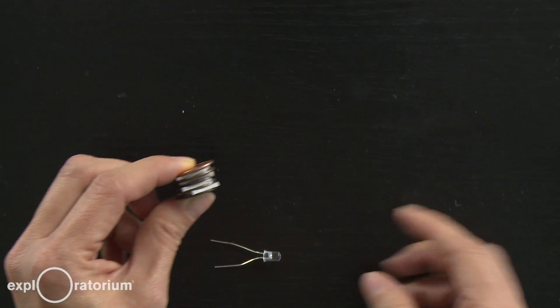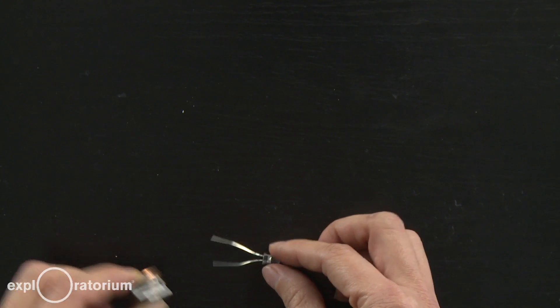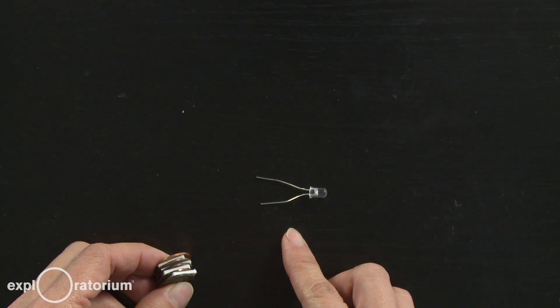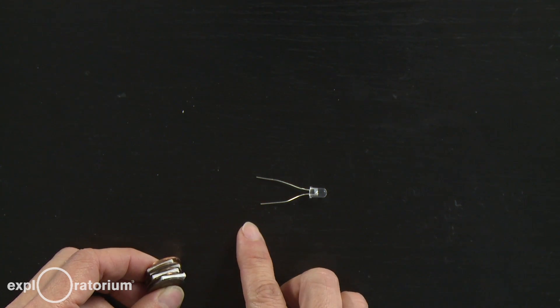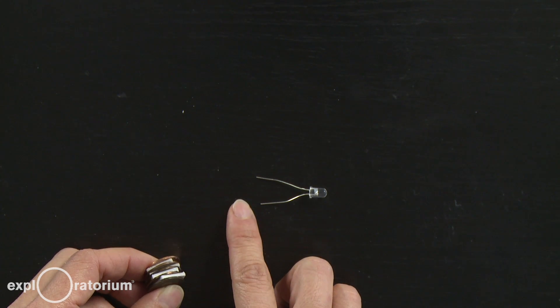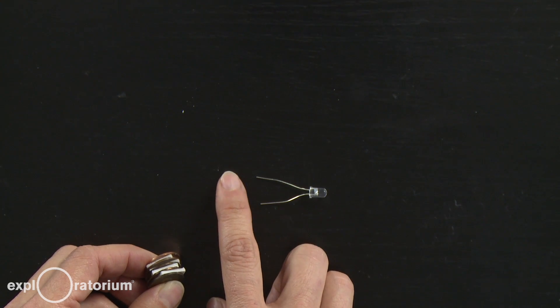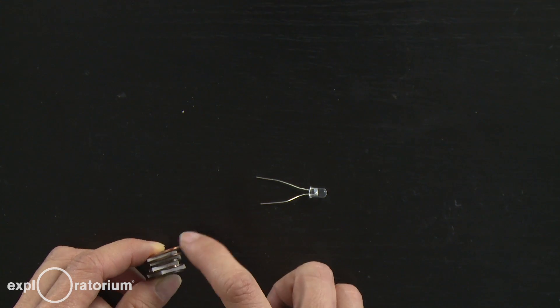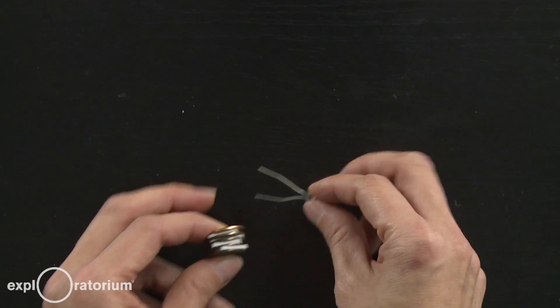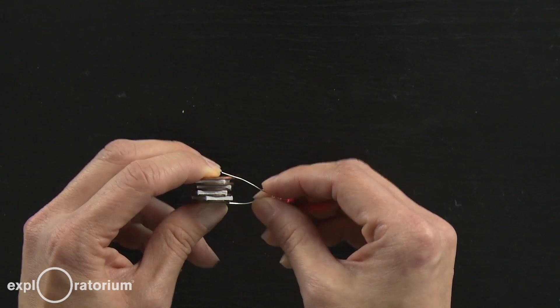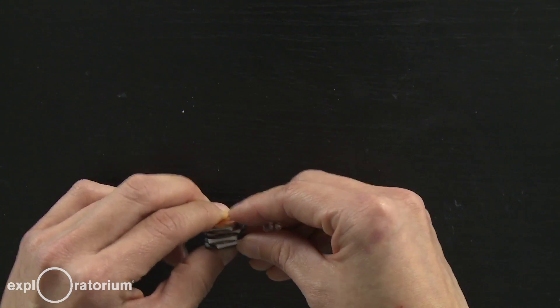To see if your battery works, you want to try to power something, and that's where your LED comes in. LEDs only work in one direction, so this is important. Take a look at your LED and see which leg is slightly longer. The slightly longer leg is the positive terminal. And that's the side that's going to go to your intact copper penny. So I'm going to bend my LED so the short leg goes to the bottom and the top leg goes to the top.